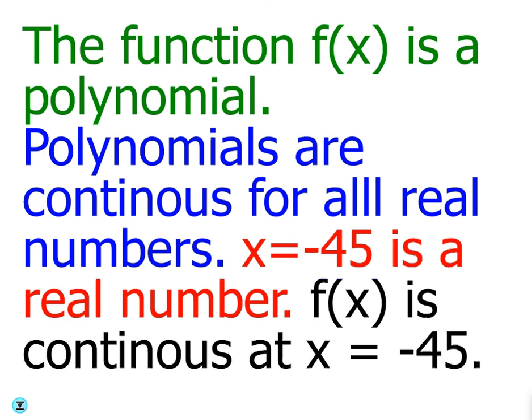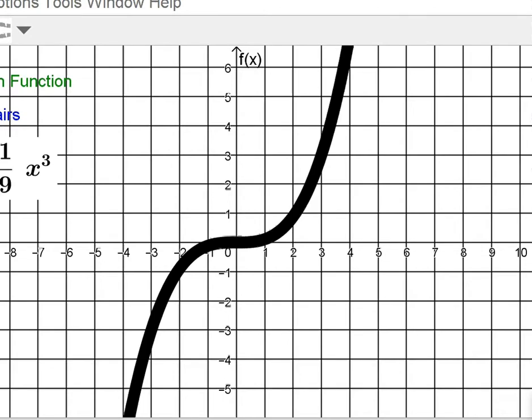Explanation. Yes. All you have to do is identify it's a polynomial. Since it's continuous everywhere, certainly it's going to be continuous at x equals negative 45. It could be continuous at x equals 0 or anywhere else. I want to show you guys an example of what the function would look like.